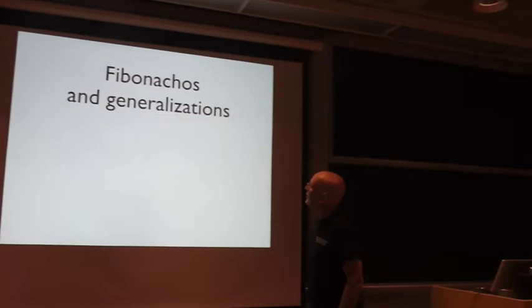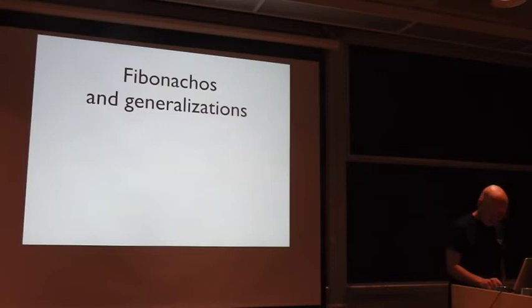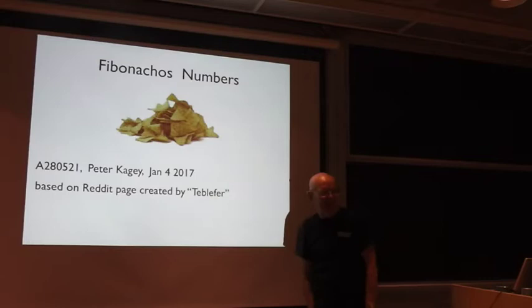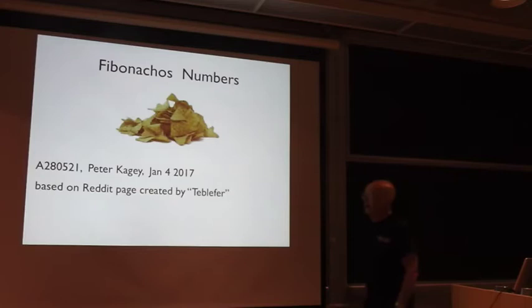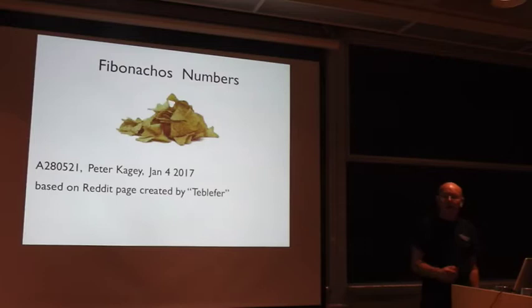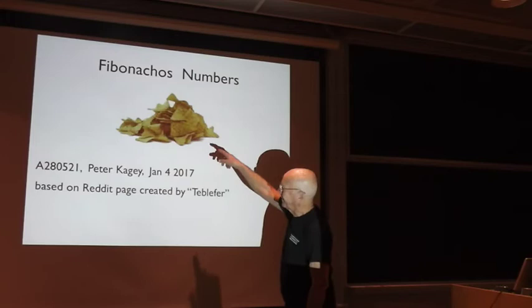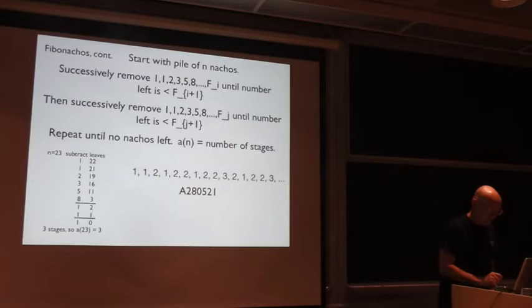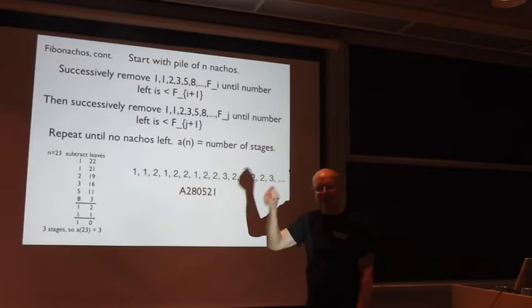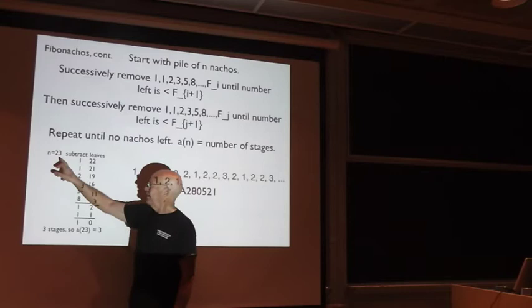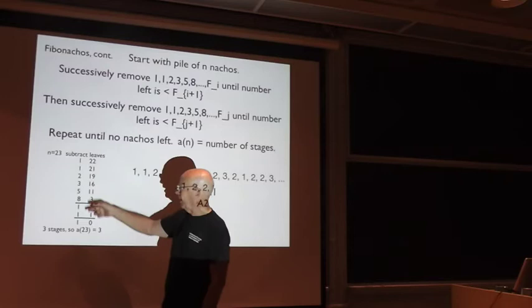Fibonaccio's came up. They were created on the Reddit website by someone called Ted Bleffer, and the sequence was sent in by Peter Kagey, who's a regular contributor of sequences and edits to the OAIS on January 4th of this year. So the definition is you have a pile of nachos. Nachos, whatever they are. They look like that when you eat them. So you have a pile of them. You have N of them. And maybe you have two people playing, or maybe it doesn't matter. You remove the Fibonacci numbers from the pile.